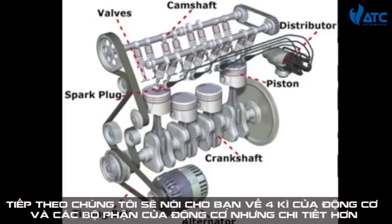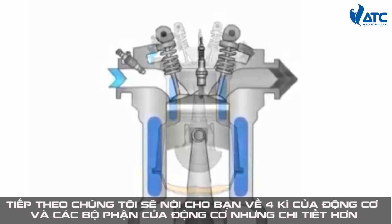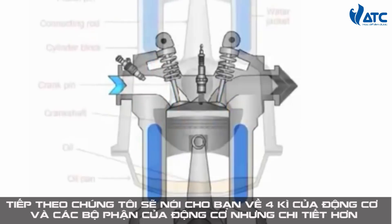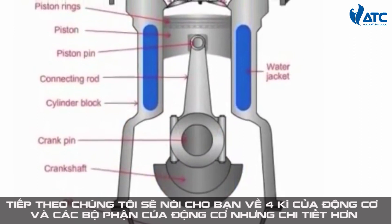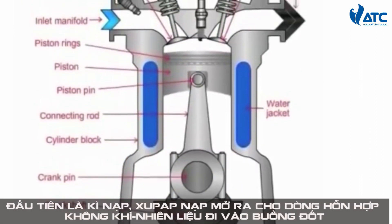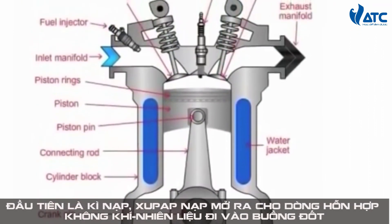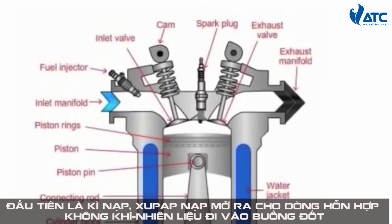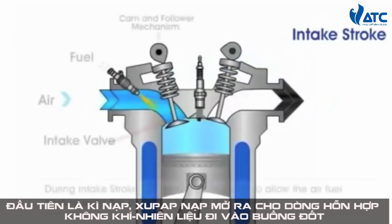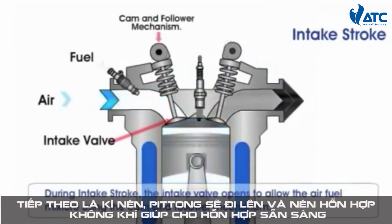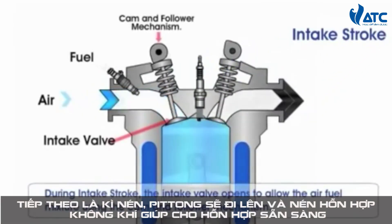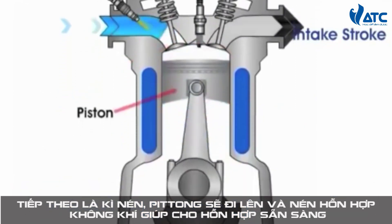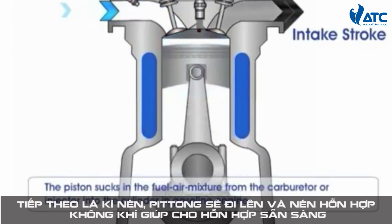Next we will show the four strokes of the engine. These are all the parts of the engine just explained, shown in more detail. The first stroke is the intake stroke — as the piston goes down, the valve opens and lets air and fuel in.